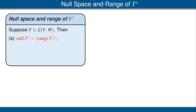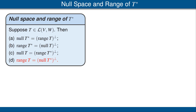Now we have an important four-part theorem that tells us the relationship between the null spaces of T and T star and the ranges of T and T star. Suppose T is a linear map from V to W. The first part says the null space of T star is equal to the orthogonal complement of the range of T. The second part says the range of T star is equal to the orthogonal complement of the null space of T. The third result is that the null space of T is the orthogonal complement of the range of T star. And the fourth result is that the range of T is equal to the orthogonal complement of the null space of T star.